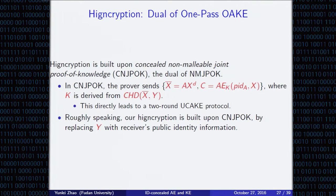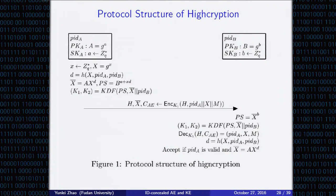This directly leads to a two-round unilateral identity-concealed authenticated key exchange protocol. Roughly speaking, our HICE scheme is built on CNJPOK by replacing the random challenge Y with the receiver's public identity information. After receiving bar-X and C, the receiver first computes using his static private key small b, then decrypts the ciphertext to get the sender's identity and its actual ephemeral component big X, then computes D, and finally checks whether bar-big-X equals big X times big X to the power of D. If yes, then accept.